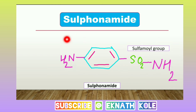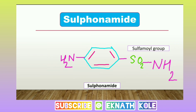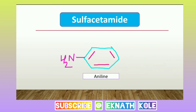If you remember the sulfonamide group, you can easily draw the structure of sulfacetamide. What is acetamide? It is CH3-C(=O)-NH2. This acetamide component is combined with the sulfonamide group to form sulfacetamide.